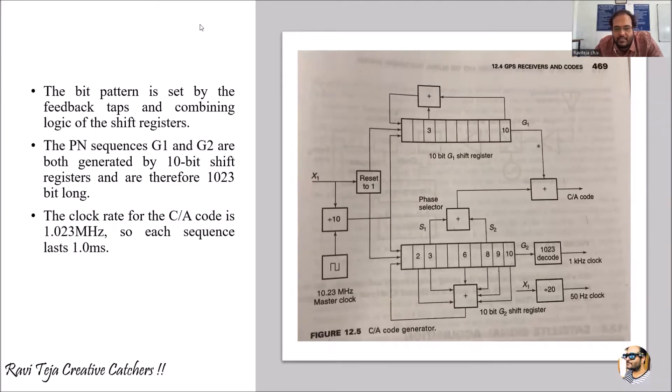Now this is the C/A code generator. It just uses shift registers in order to generate a C/A code. The bit pattern is set by the feedback tabs and combining logic of the shift registers. Using this we are able to generate bit patterns. The PN sequences G1 and G2 are both generated by 10-bit shift registers.